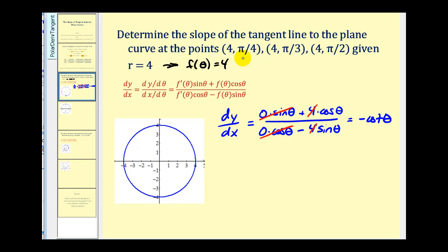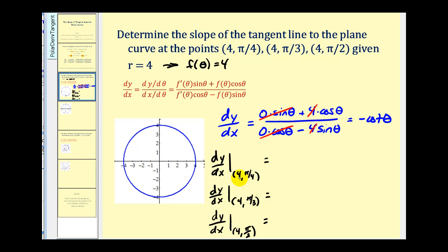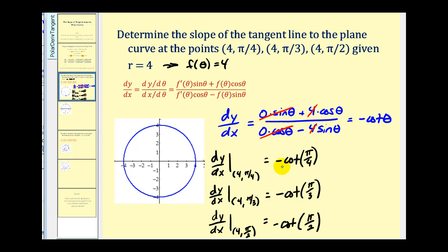So dy/dx equals negative cotangent theta. To find the slopes at the three given points, we replace theta with each angle. For the first point, theta equals pi over four. For the second, theta equals pi over three. For the third, theta equals pi over two. Since the tangent of pi over four equals one, the cotangent of pi over four also equals one, so the slope here is negative one.